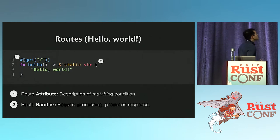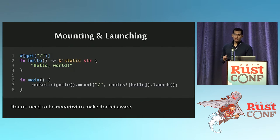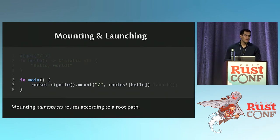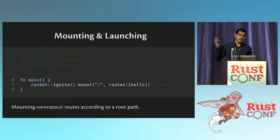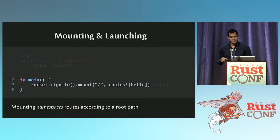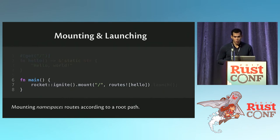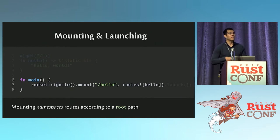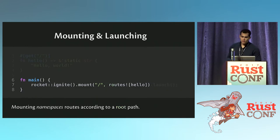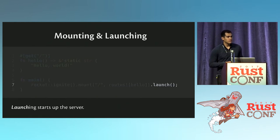Now, you do need a main function, so this is not the 100% complete application. The main function looks like this. The first thing you see is rocket.ignite() — you need to turn on the rocket if you're going to launch this thing. Then you mount some stuff on the rocket. Mounting means you namespace the route, so if you change the base to slash hello, every route would need to be prepended with slash hello for Rocket to route things to it. And then finally you launch the rocket, which starts up the server. It also prints a bunch of emojis, which is a contentious point.